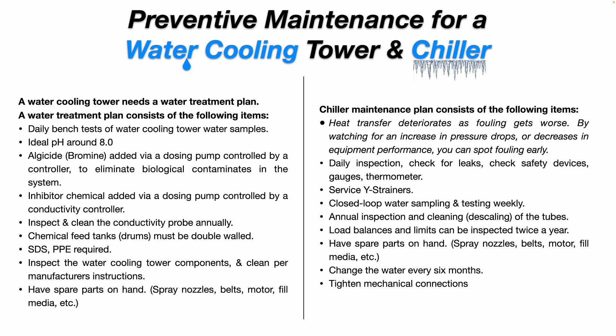A chiller maintenance plan consists of the following items. Heat transfer deteriorates as fouling gets worse, so by watching for an increase in pressure drops or decreases in equipment performance, you can spot fouling early before serious damage occurs. Daily inspection: check for leaks, check safety devices, gauges, thermometers, etc. Service your Y strainers as needed, because if those get plugged, that's going to restrict your water flow and reduce your cooling. Closed loop water sampling and testing should be done weekly. Annual inspection and cleaning includes descaling of the tubes, which can be done with descaler chemicals pumped through the tubes, projectile devices, or special brushes that look like a skinny bottle brush.